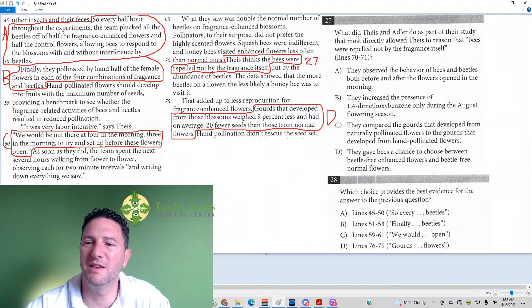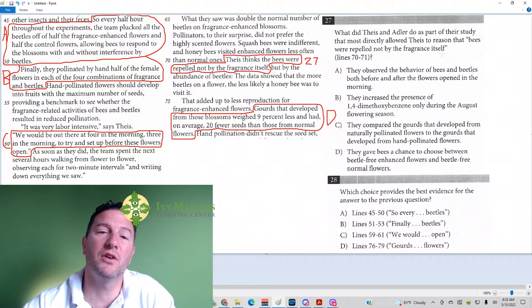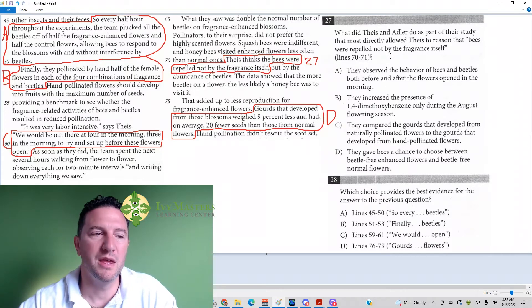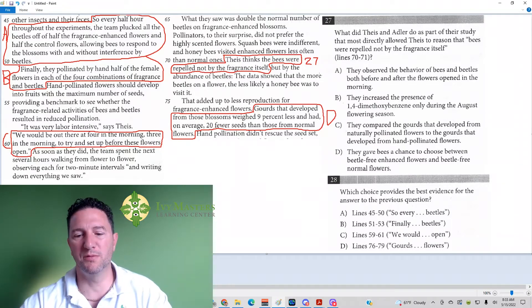What did Theus and Adler do as part of their study that most directly allowed Theus to reason bees were repelled not by the fragrance that was selling? In other words, bees were repelled by something other than the strong fragrance of the flower. And what's a good way to approach this type of question?